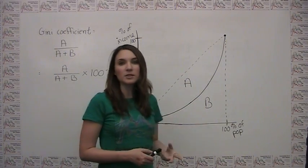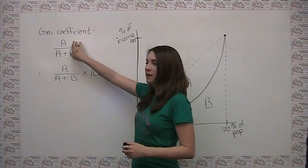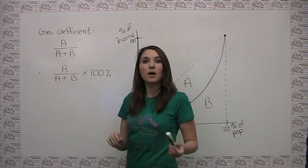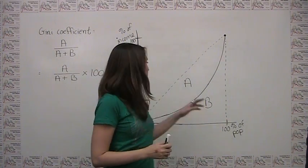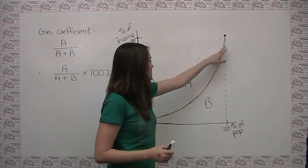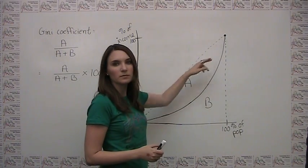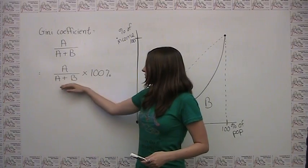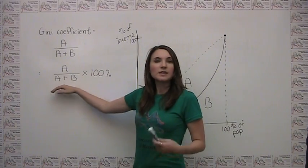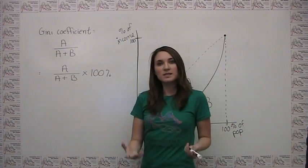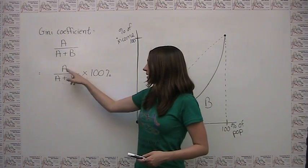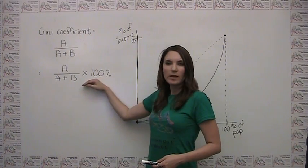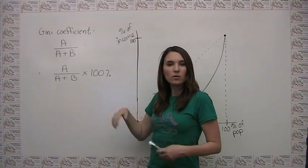The Gini coefficient is simply area A divided by the total of A plus B, which is just this whole triangle. Sometimes the Gini coefficient is represented as an index or a percentage, in which case you would take A divided by A plus B and multiply it by 100%.